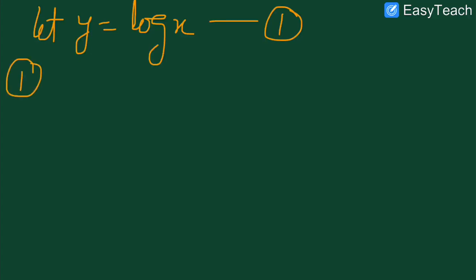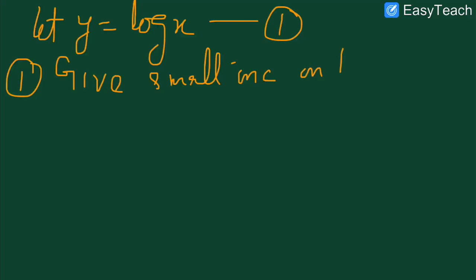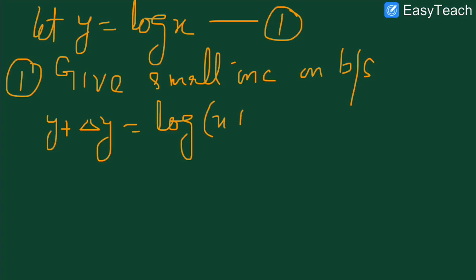You know there are four steps involved in the ab initio method. Let's start from step number one: we give a small increment on both sides — on both variables x and y. Since x is an independent variable and y is dependent, when we change x, y will automatically get changed. So we can write y plus delta y is equal to log of x plus delta x. Let's name this equation as equation second.